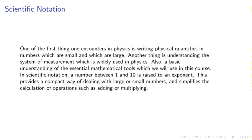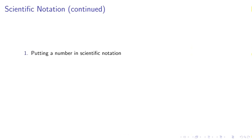One of the first things one encounters in physics is writing physical quantities which are large and which are small. Another thing is understanding the system of measurement widely used in physics. Also, a basic understanding of the essential mathematical tools which we will use in this course. In scientific notation, a number between 1 and 10 is raised to an exponent.